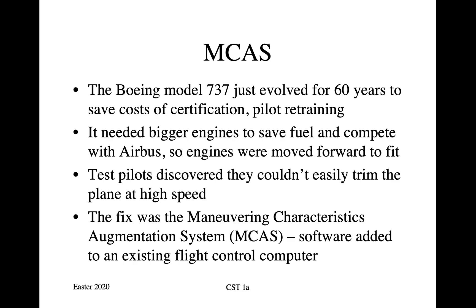The Boeing 737 is the workhorse of the world's airlines — a short-to-medium range single-aisle plane that carries a bit over 100 people — and it had been in service for 60 years, going through five successive variants. The reason they kept the same model was the same reason we saw with two different types of the same infusion pump earlier in the course: it saves the cost of certification, and it saves the cost of pilot retraining. The latter is obviously sensible; the former is perhaps a bug rather than a feature, as we will see.